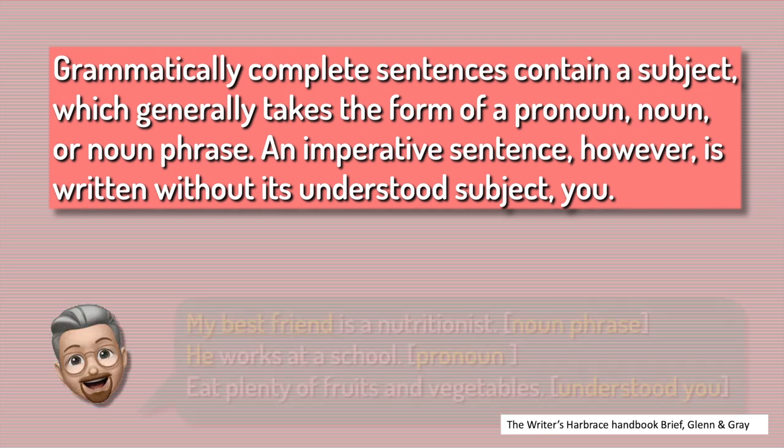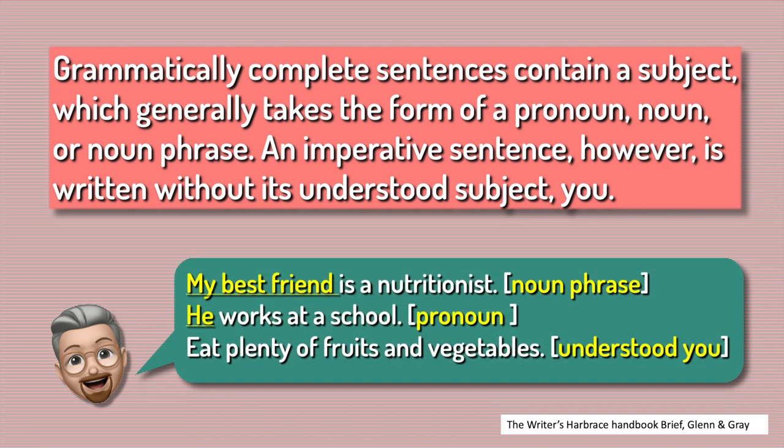Let's look at these examples. My best friend is a nutritionist. My best friend is a noun phrase. He works at a school. He here is the pronoun. Instead, eat plenty of fruits and vegetables. Here is an imperative sentence, so you is understood.